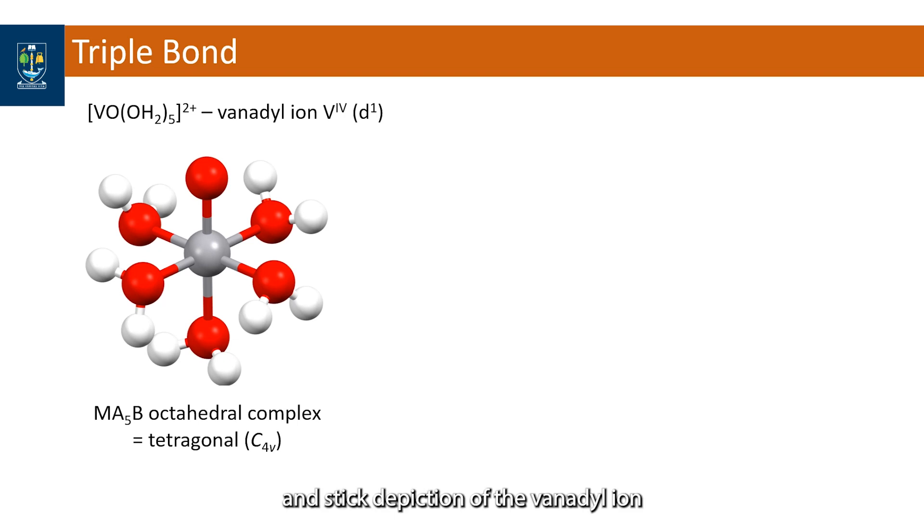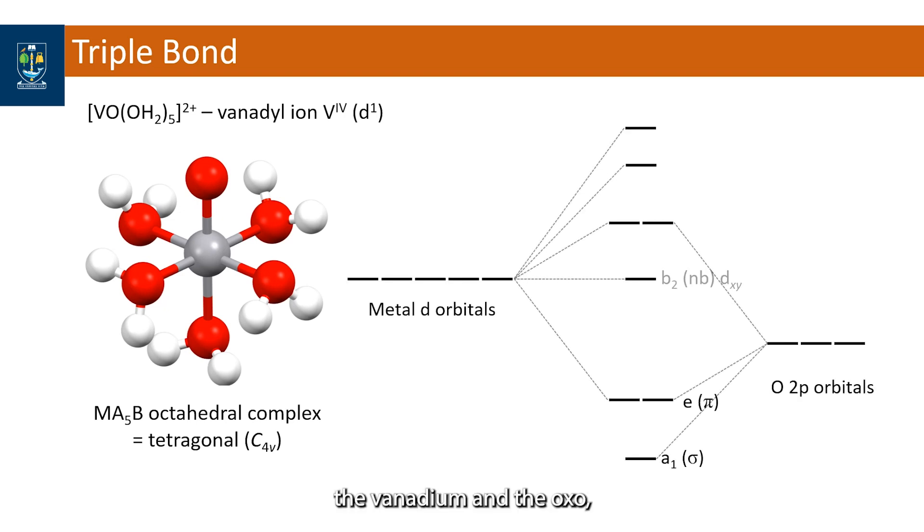This is the ball and stick depiction of the vanadyl ion in aqueous solution which is a tetragonal complex with C4v symmetry on account that the oxo ligand is different to the five water ligands. To determine the bond order between the vanadium and the oxo we draw our partial MO scheme for an oxo metal unit with C4v symmetry.